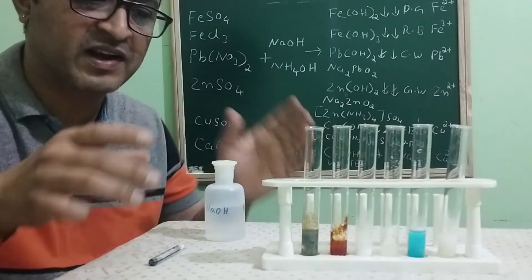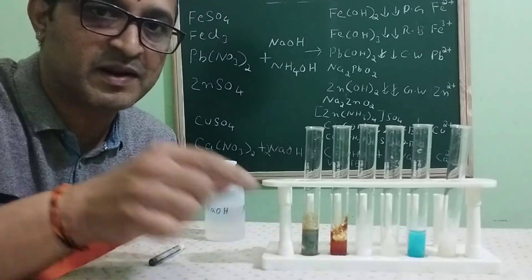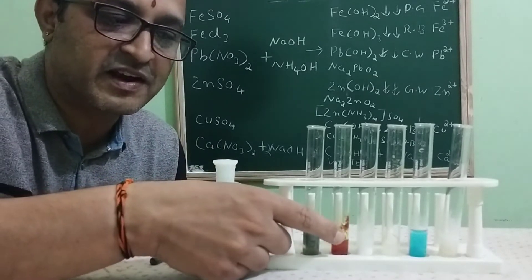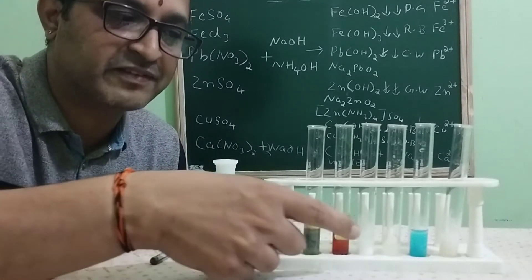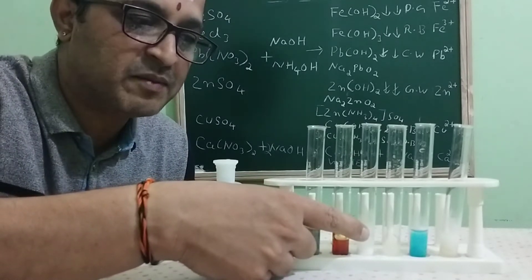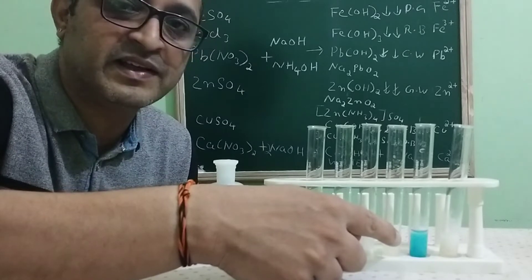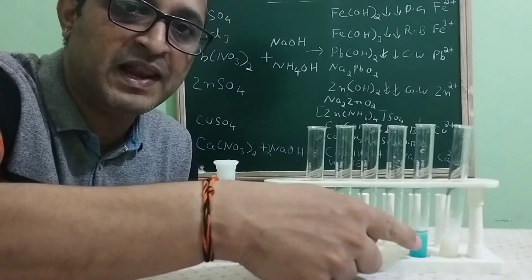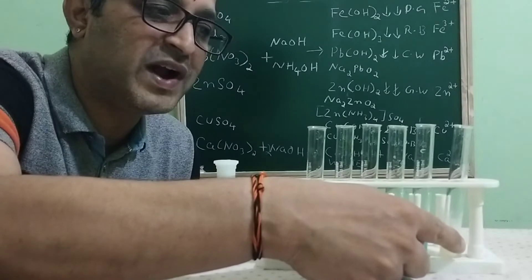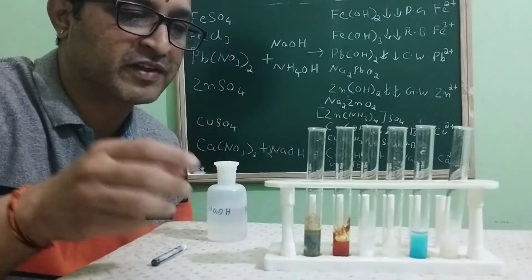What is the conclusion? A dirty green precipitate represents Fe2+, reddish brown represents Fe3+, chalky white represents Pb2+, gelatinous white represents Zn2+, pale blue represents Cu2+, and white precipitate represents Ca2+.